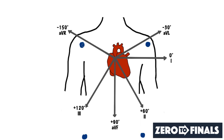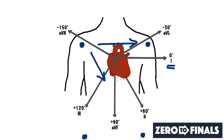For example, electrical activity that moves from the right shoulder to the left shoulder will cause a positive rise in lead one, because lead one is going in that direction. Lead two is measured from the right shoulder to the left foot, at 60 degrees. And lead three is measured from the left shoulder down to the right foot, at plus 120 degrees.